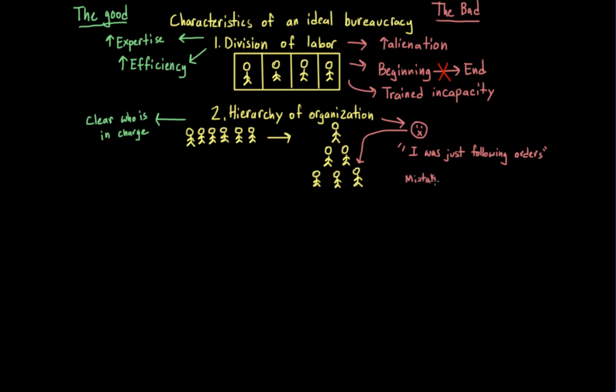This structure can also allow individuals to hide mistakes, sometimes serious mistakes, since no one person interacts with all members.